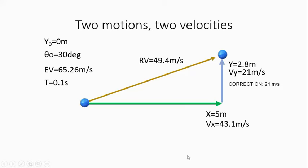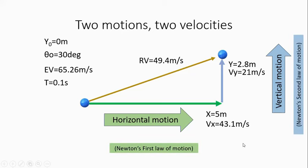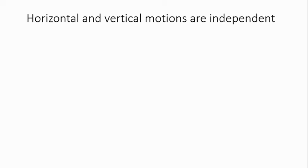So logically, if for the same period of time an object made two different distances, the velocities should not be the same. Horizontal velocity is 43.1 m/s, vertical is 21 m/s, and the resultant velocity is 49.4 m/s — higher than both, which is logical if you see this as a right-angle triangle where the hypotenuse is longer than either its base or height. We call this horizontal motion — governed by Newton's first law — and vertical motion — governed by Newton's second law, which we shall discuss in more detail later.